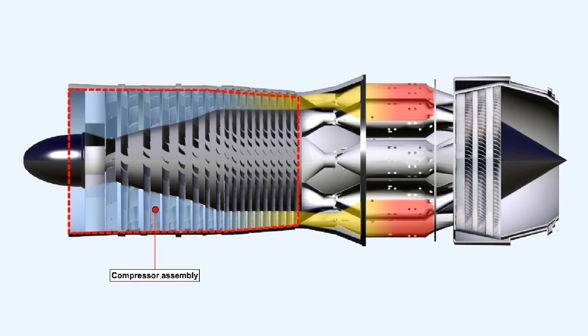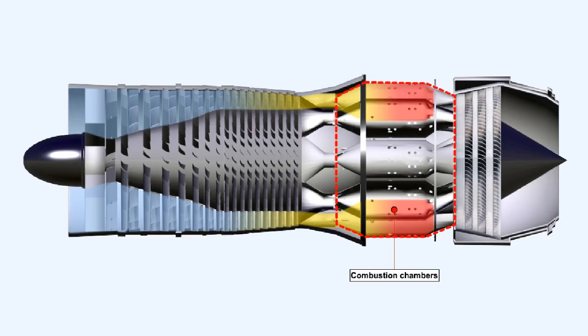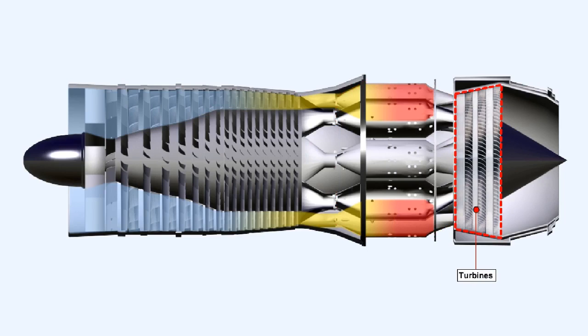To increase the efficiency of the gas turbine engine, the air being fed into it must be compressed before it has fuel added to it and it's burnt in the combustion chambers, and it's subsequently expanded in the turbines.